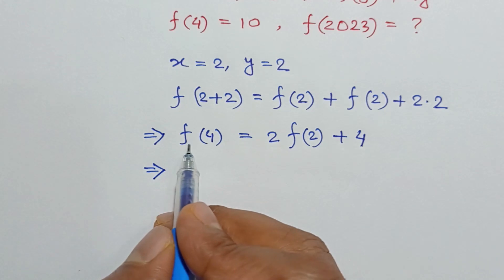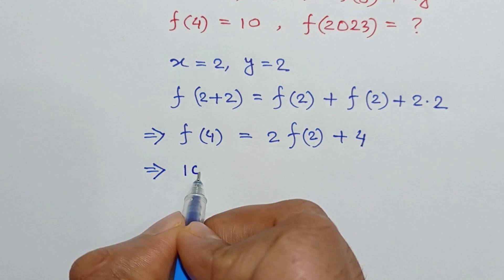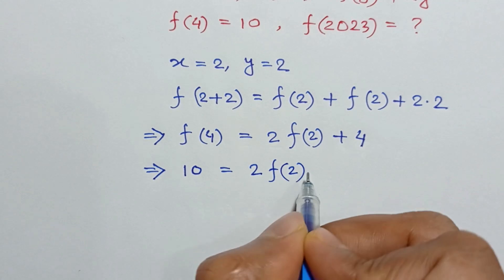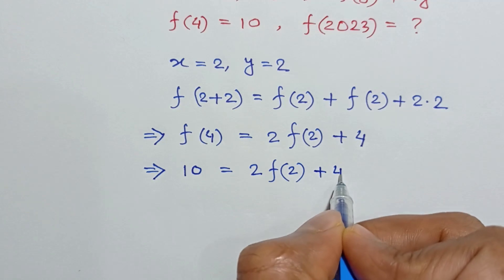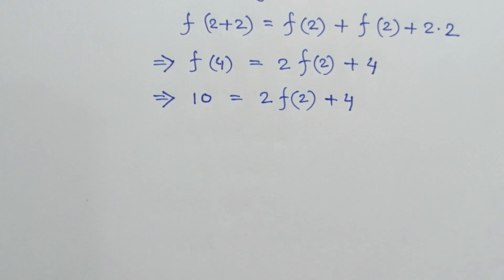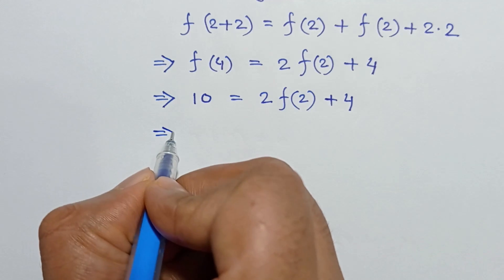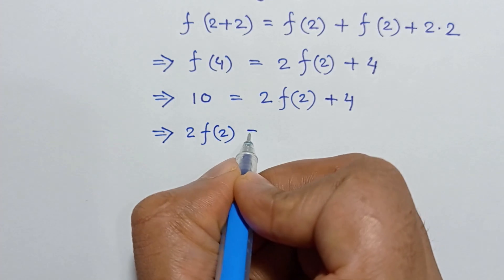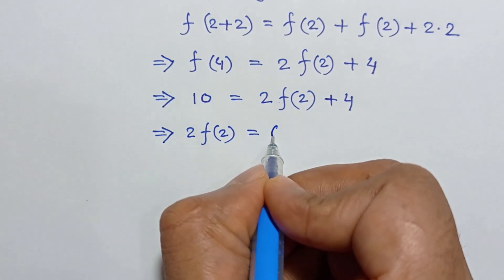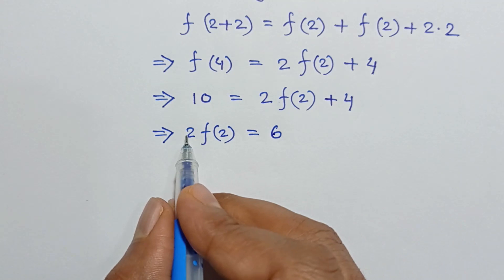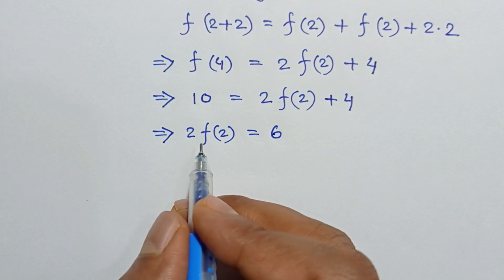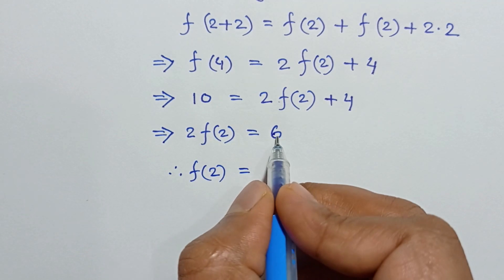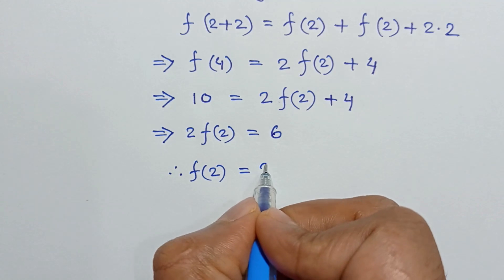The value of f(4) is 10, so substituting: 10 = 2·f(2) + 4. Therefore 2·f(2) = 10 − 4 = 6. Dividing both sides by 2, we get f(2) = 6/2 = 3.